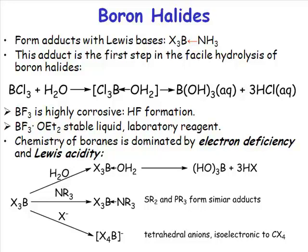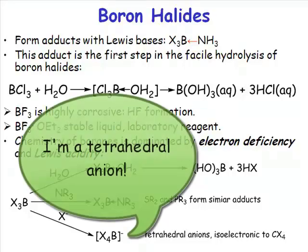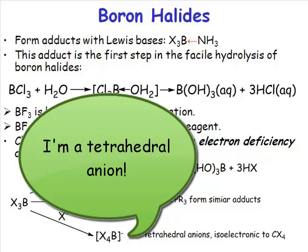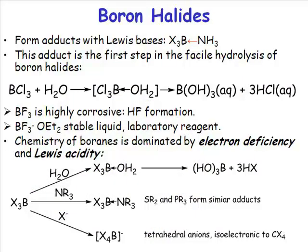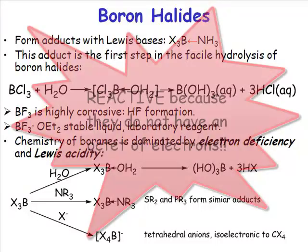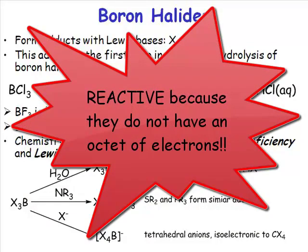That adduct would be the boron tetrachloride anion — or indeed boron tetraiodide or boron tetrafluoride. These are tetrahedral anions, and around the boron they have the same number of electrons as carbon tetrachloride. So boron tetrahalide anions are isoelectronic with CCl₄ — they have an octet of electrons. We therefore know that the boron trihalides are reactive because they do not have an octet of electrons.